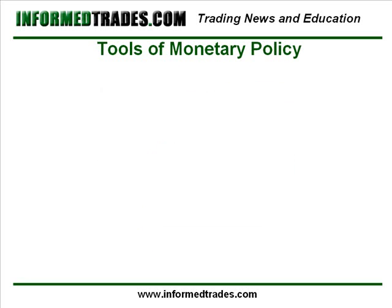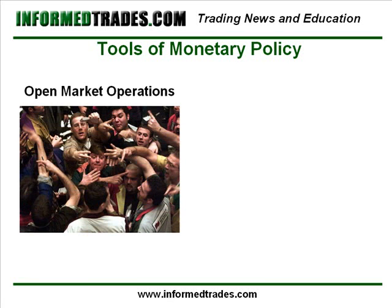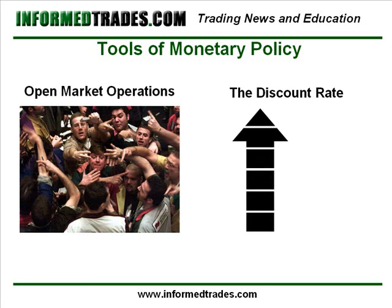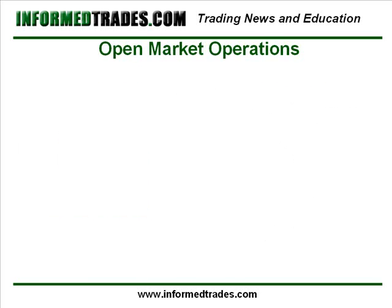With this in mind, there are three tools available to the Fed for enacting monetary policy, which are open market operations, raising or lowering the discount rate, or raising or lowering reserve requirements. The most common tool that the Fed uses, and therefore the one which we will cover, is open market operations. Once we have an understanding of this and how increases or decreases in the supply of money affect demand and prices, the other two less commonly used tools will be more easily understood.